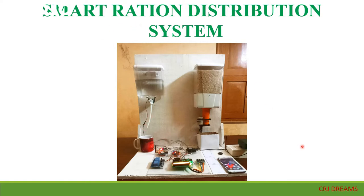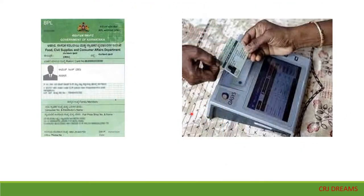As you all know, a ration card is a document issued under the authority of the state government as per the public distribution system. Here, instead of a ration card, a smart ration card will be used for authorizing and authenticating a person's identity. RFID is a part of automatic identification and data capture technologies and is a fast and reliable means of identifying objects. This system provides materials automatically without the help of humans.